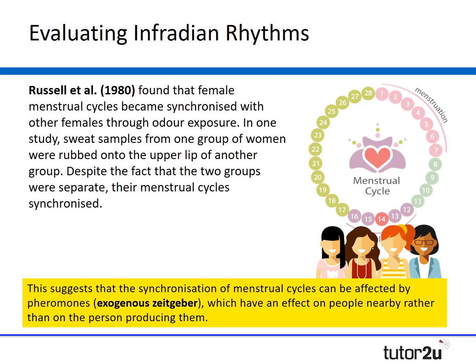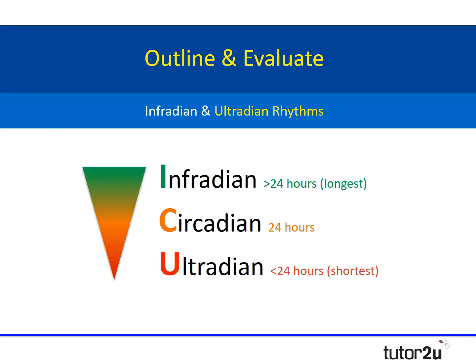There's an interesting point here: evolutionary psychologists argue that synchronised menstrual cycles provide an evolutionary advantage for groups of women, because synchronisation of pregnancies means children can be shared among multiple mothers, thereby sharing available resources. So there we have it for infradian rhythms.